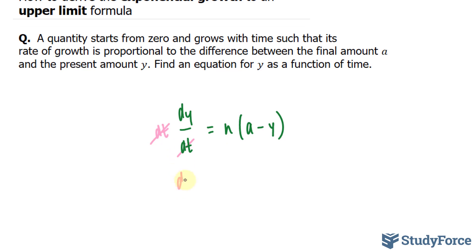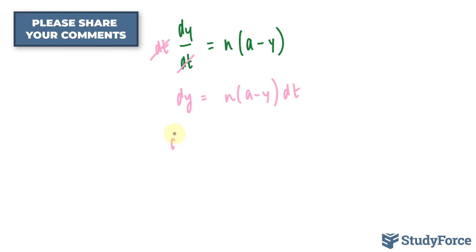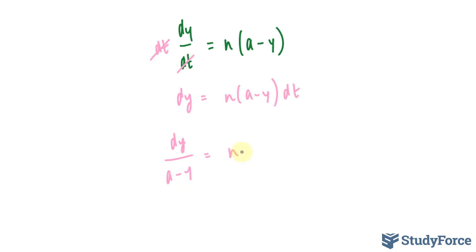And we're left with dy is equal to n bracket a minus y times dt. And I want to bring the y terms to the dy side. So I'll divide both sides now by a minus y. And we end up with dy over a minus y is equal to n dt.